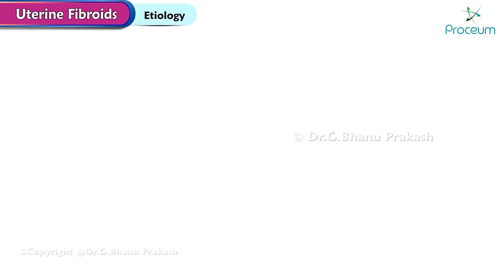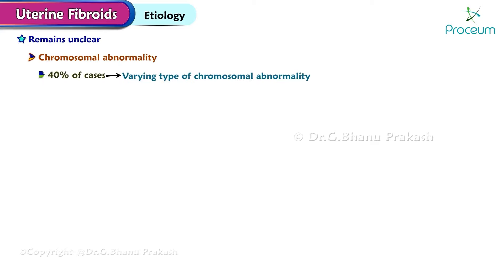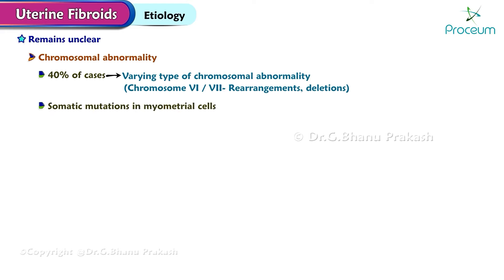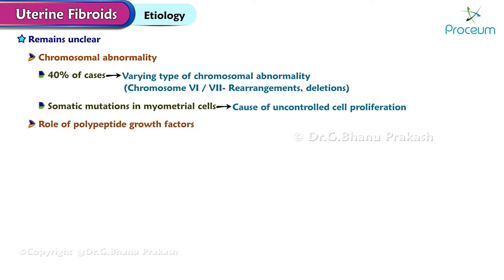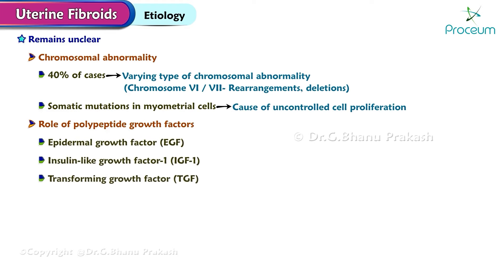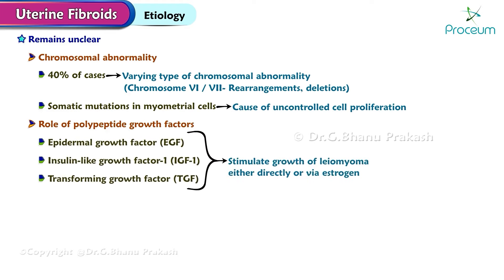Etiology still remains unclear. The following theories are implicated. Chromosomal abnormality: in about 40% of cases, there is a varying type of chromosomal abnormality, particularly chromosome 6 or 7 rearrangements and deletions. Somatic mutations in myometrial cells may also be the cause of uncontrolled cell proliferation. Role of polypeptide growth factors: epidermal growth factor, insulin-like growth factor 1, and transforming growth factor stimulate the growth of leiomyoma, either directly or via estrogen. A positive family history is often present.